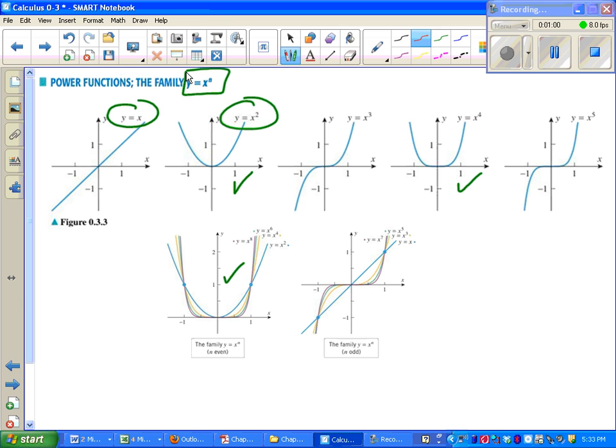Whereas, when n is odd, even if n is equal to one, you get end behavior that has one arrow go up, one arrow go down. That's always true with polynomials, where we're looking at y equals x to the n for the leading term.